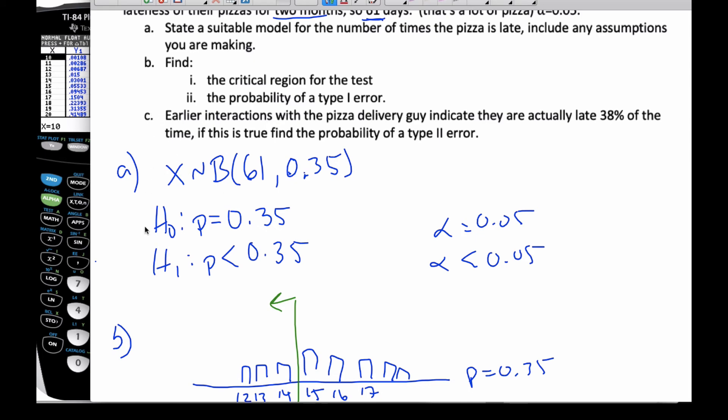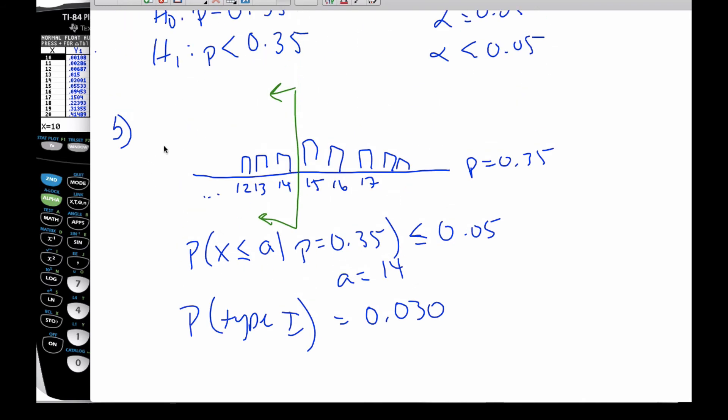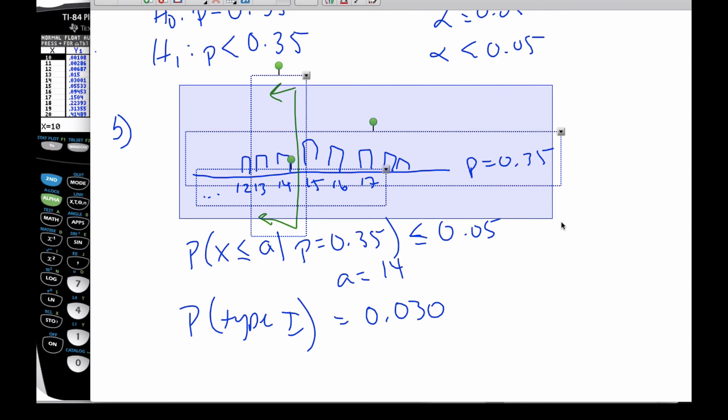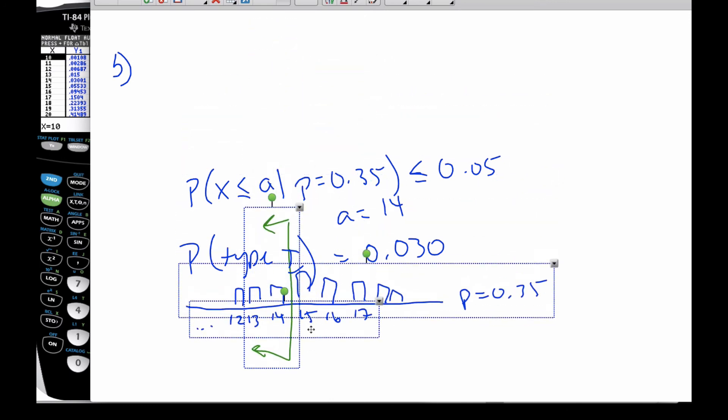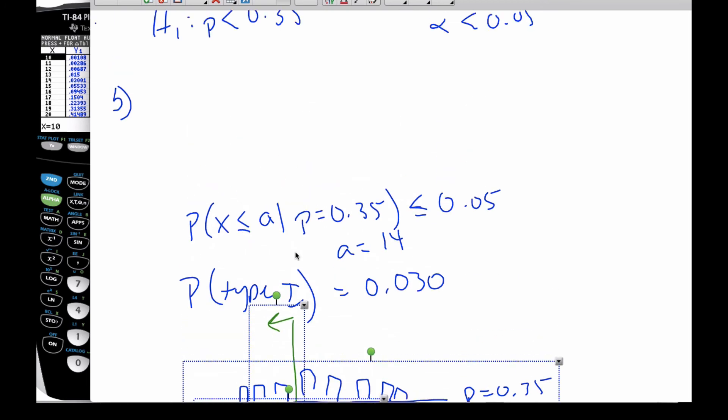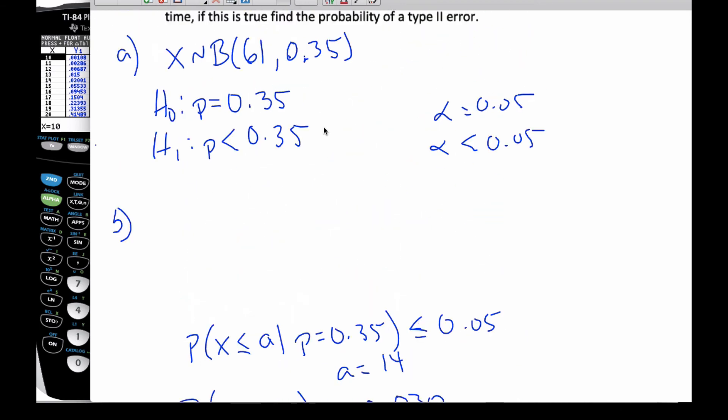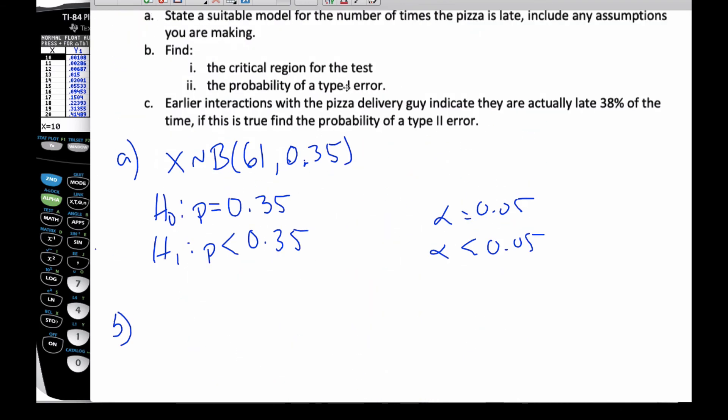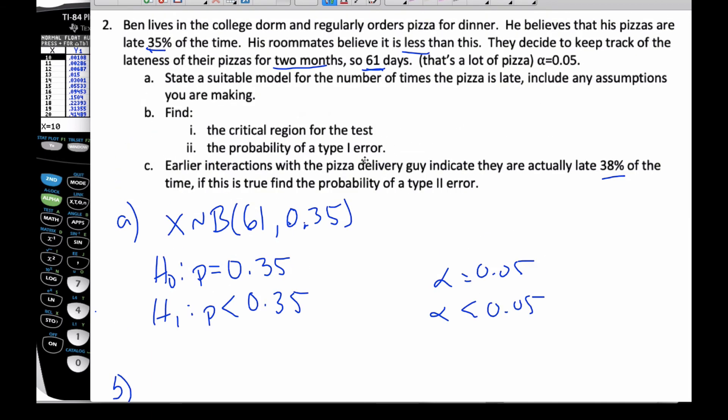Going to part C now, let me take this here and move it down. For part C, Type 2, earlier interaction with a pizza guy makes them think it's actually late 38% of the time, even though they thought it was less.